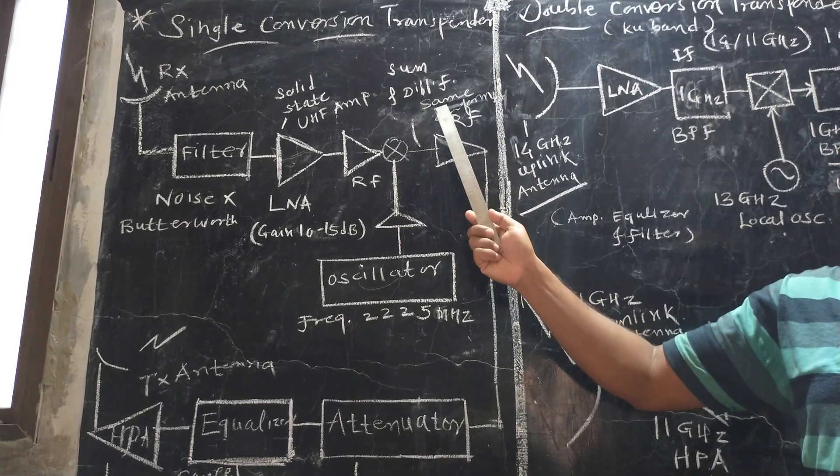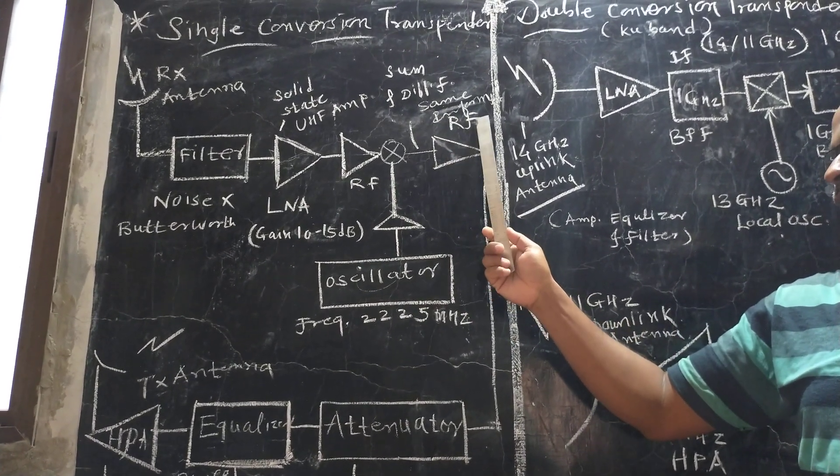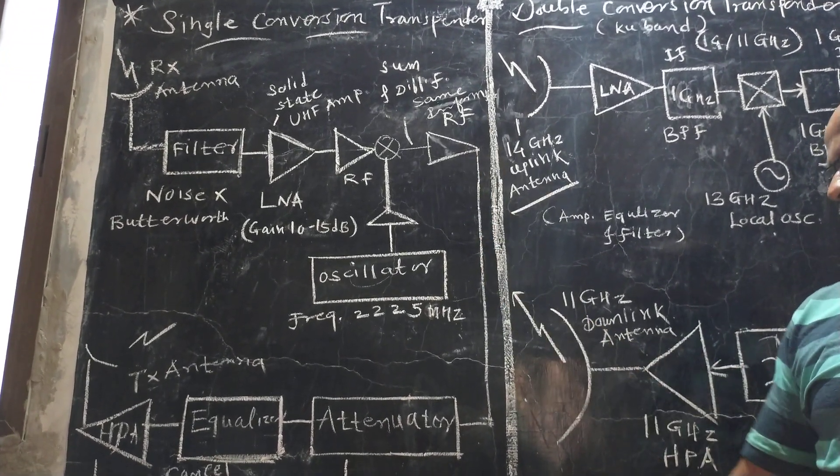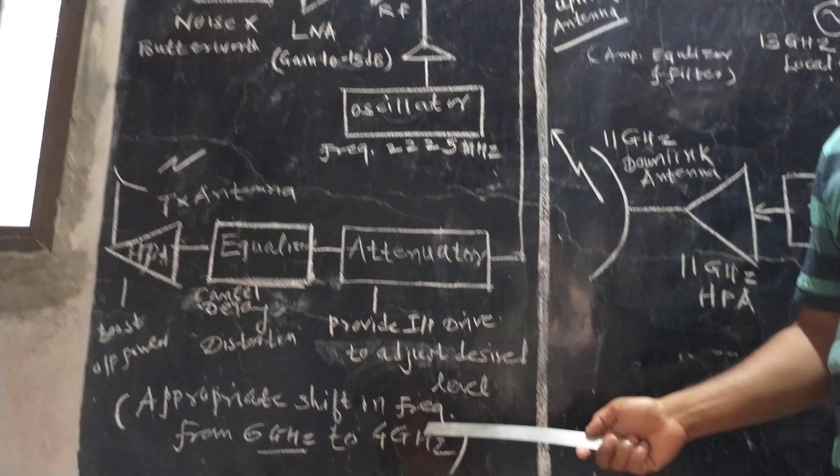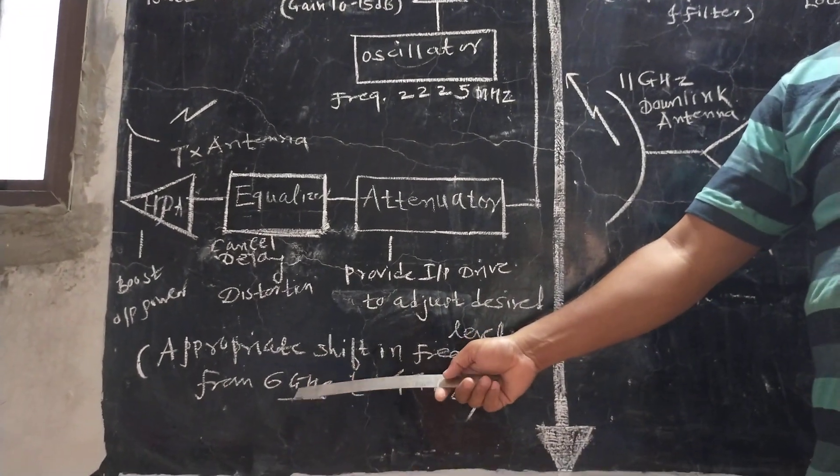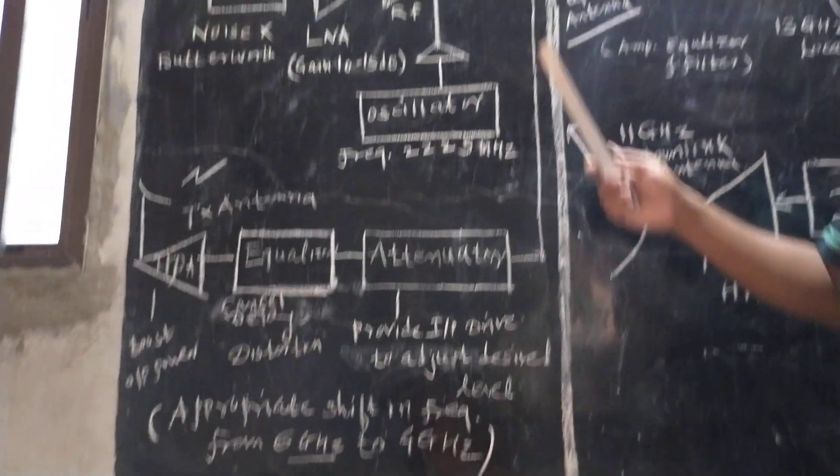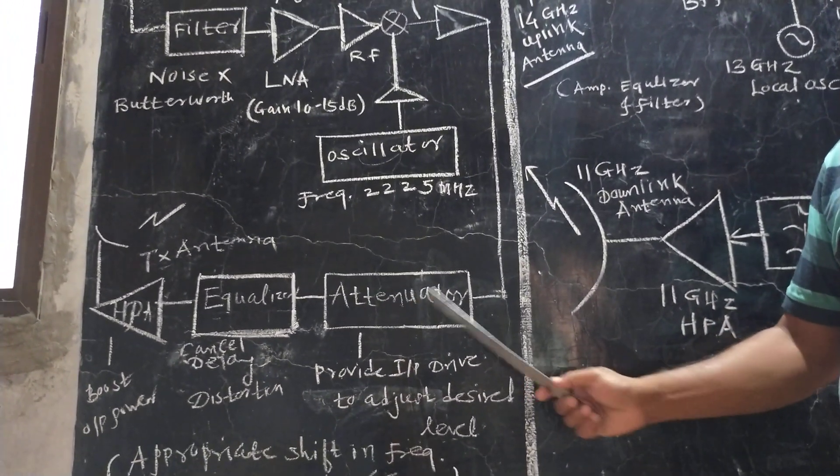The difference frequency consists of the same information with an appropriate shift in frequency from the uplink frequency of 6 GHz to the downlink frequency of 4 GHz. The output is then given to the attenuator.